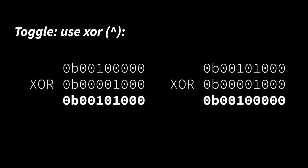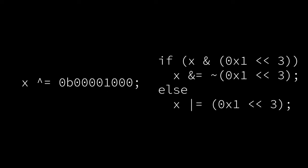I used this in a previous video when I was blinking an LED — I'll link to that in the description if you want to check it out. This example right here will change the bit in bit position three to whatever it wasn't before: if it's a one it turns to a zero, if it's a zero it changes to a one. That's really nice because that one XOR statement can replace an if statement and a set and a clear, so it can tidy up your code a little bit.